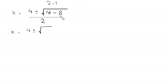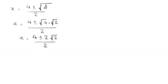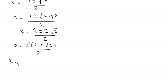Simplifying: x equals 4 plus or minus square root of 8, over 2. Since square root of 8 equals 2 root 2, we get x equals (4 plus or minus 2 root 2) over 2. Factoring out 2 from the numerator and cancelling, x equals 2 plus root 2 or x equals 2 minus root 2.